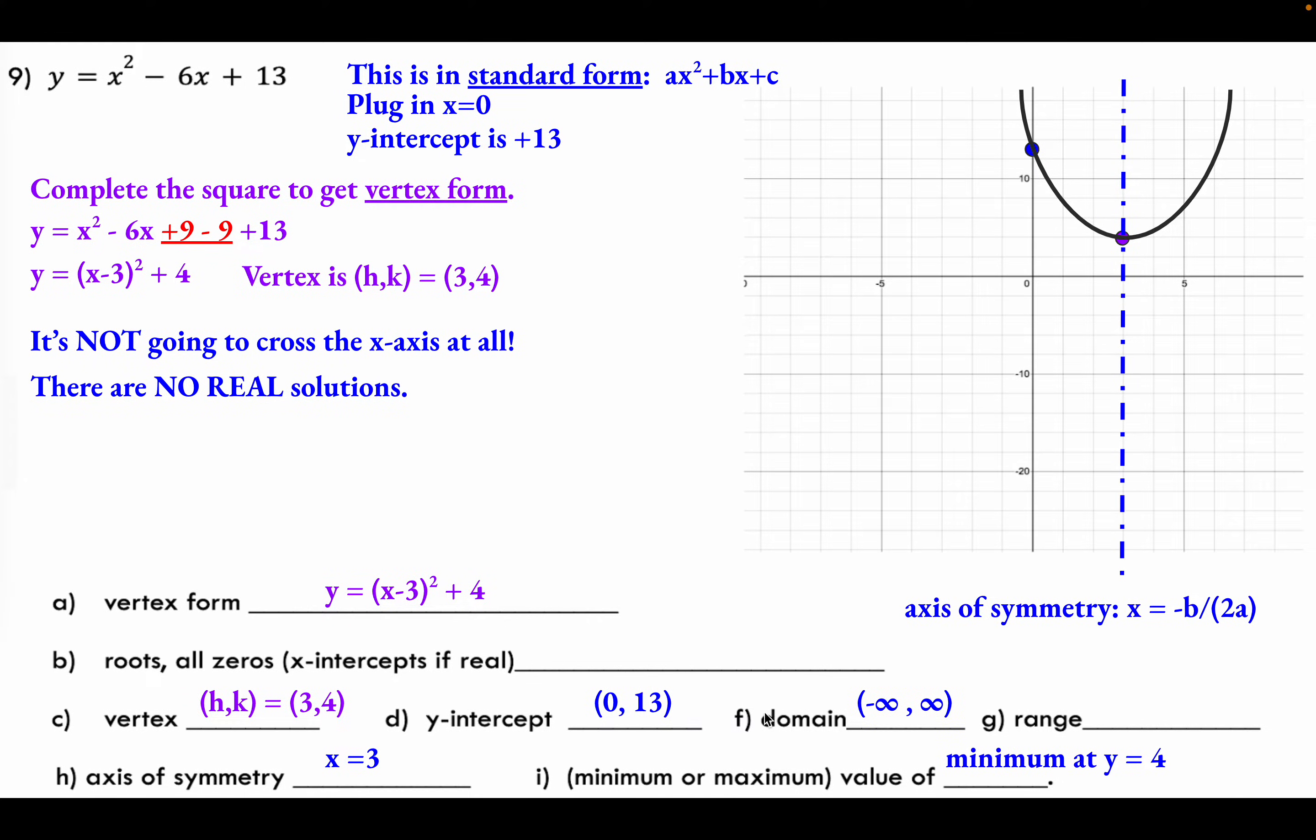As far as the domain, what you ask yourself is, what values am I allowed to plug in for x? Well, I could plug absolutely anything in for x. There's no restrictions on it. So this thing to the left and to the right could, any values, any horizontal value, any value of x would be an acceptable input. So our domain is basically all real numbers. It goes from negative infinity to infinity.